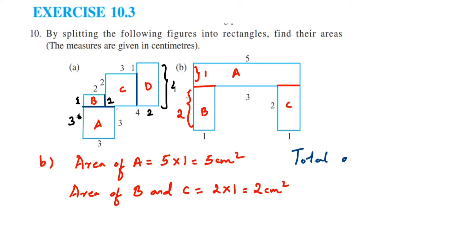Total area equals area of A plus area of B plus area of C, which is 5 + 2 + 2 = 9 centimeters squared. This is how you split a given figure into different shapes and find the total area.